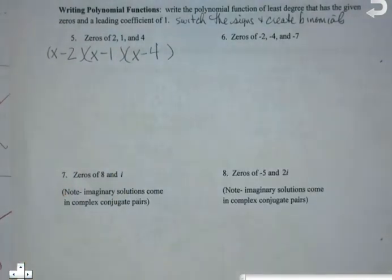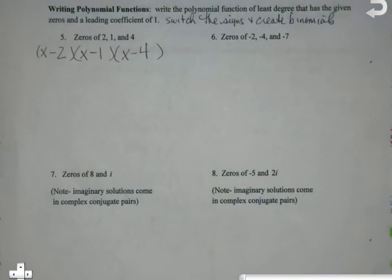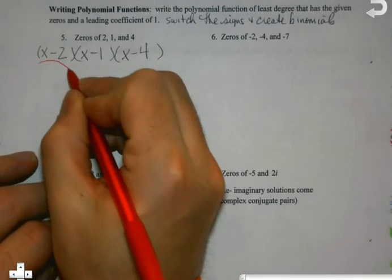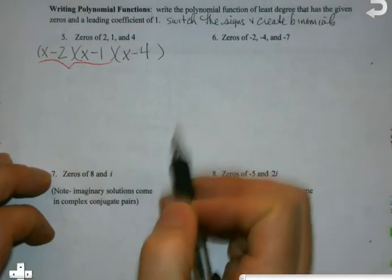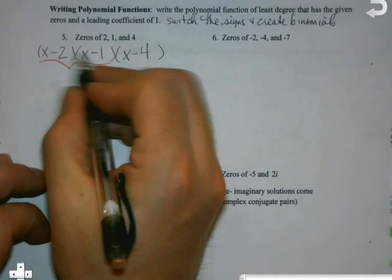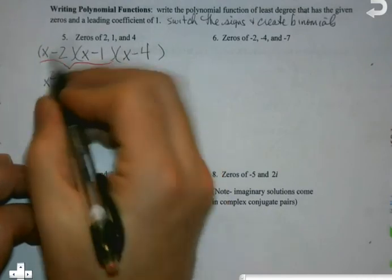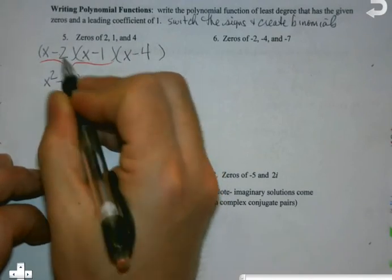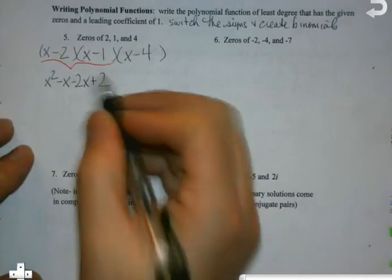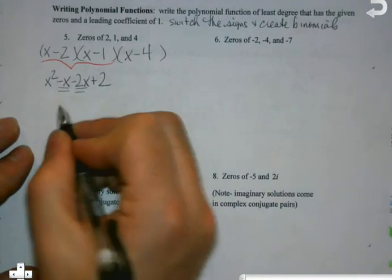And my job is going to be to multiply this out. So we've done stuff like this before. What I'm going to do is pair these off. It doesn't matter which pair you would do first, and whether you foil, whether you box, however you happen to do it, that's how we're going to work these out. So for instance here, if I multiply this out, I get x squared minus x minus 2x plus 2, and then of course I want to combine my like terms.